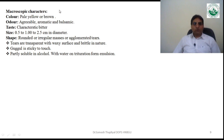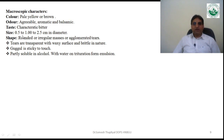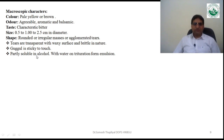Macroscopic description of guggul: it is pale yellow or brown in color, with an agreeable aromatic or balsamic odor and a characteristically bitter taste. Size is 0.5 to 2.5 centimeters in diameter. It occurs as round or irregular masses or agglomerated tears; tears are transparent with a waxy surface and are brittle in nature. It is sticky to touch, partially soluble in alcohol, and forms an emulsion with water on trituration.